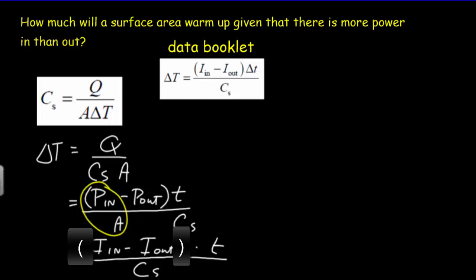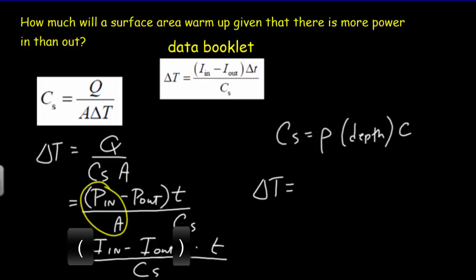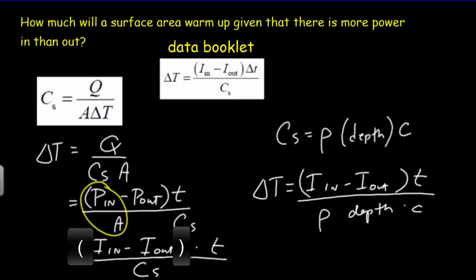The surface heat capacity equals the density of that surface times the depth of that surface times the specific heat capacity of that material. So in practical problems, ΔT = (I_in − I_out) × t / (ρ × d × c). If you're talking about a layer of ice, you'd use the specific heat capacity of ice.